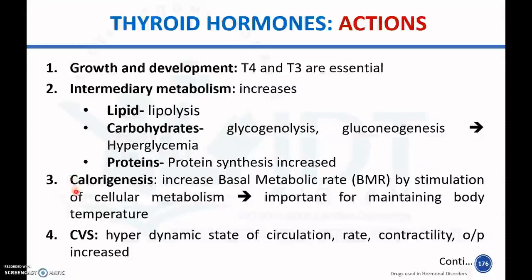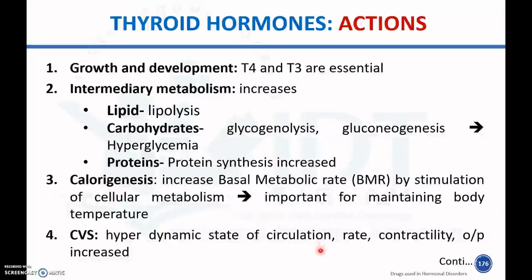The third action is calorigenesis: thyroid hormone increases the basal metabolic rate by stimulating cellular metabolism, which is also important for maintaining body temperature. In the cardiovascular system, thyroid hormone produces a hyperdynamic state of circulation — heart rate, contractility, and cardiac output are all increased by the action of thyroid hormone.